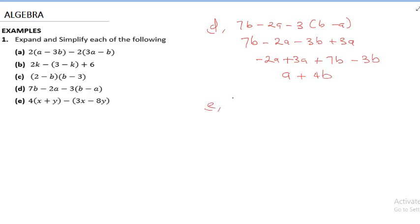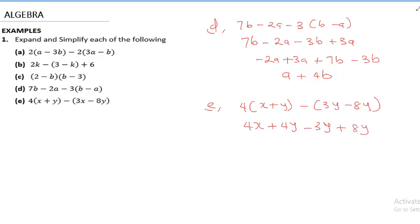The next question is 4(x + y) − 3x − 8y. Expanding: 4 times x is 4x, and 4 times y is 4y. Then we subtract 3x and subtract 8y — but wait, minus times minus 8y gives plus 8y. Collecting like terms: 4x − 3x gives x, and 4y + 8y gives 12y. So the answer is x + 12y.